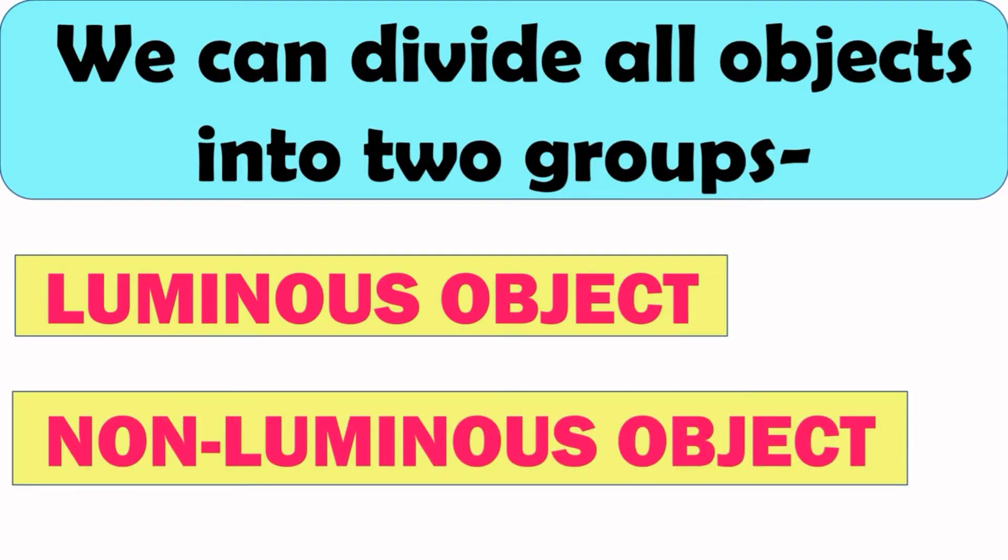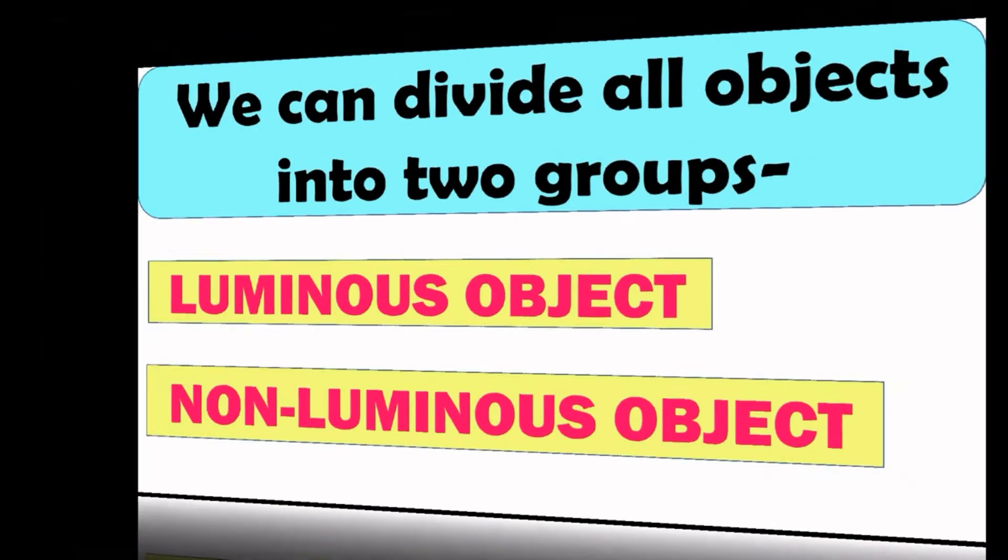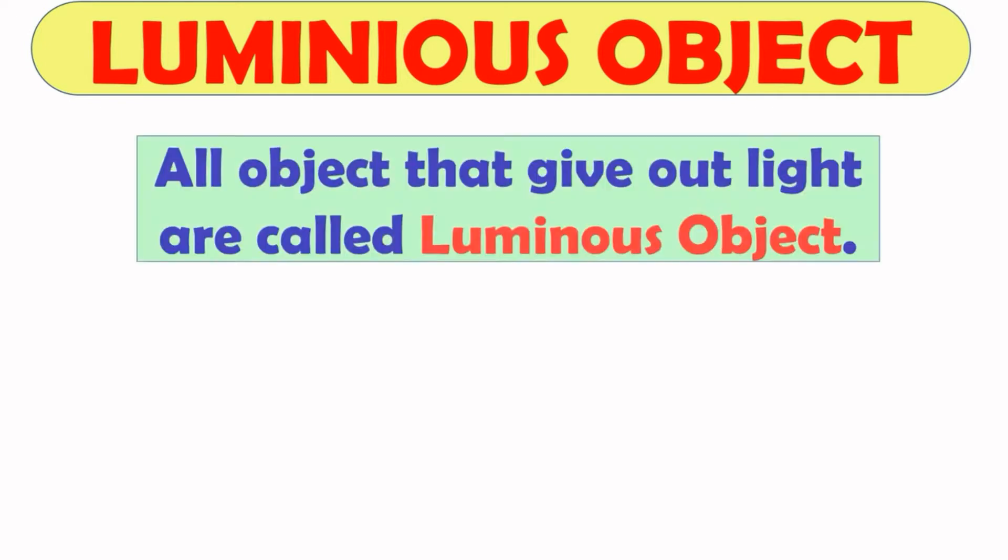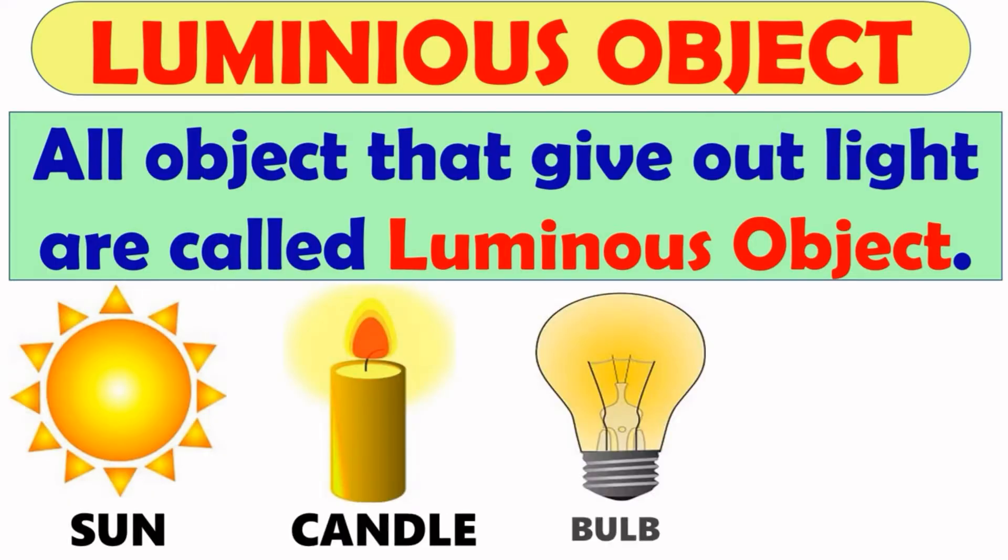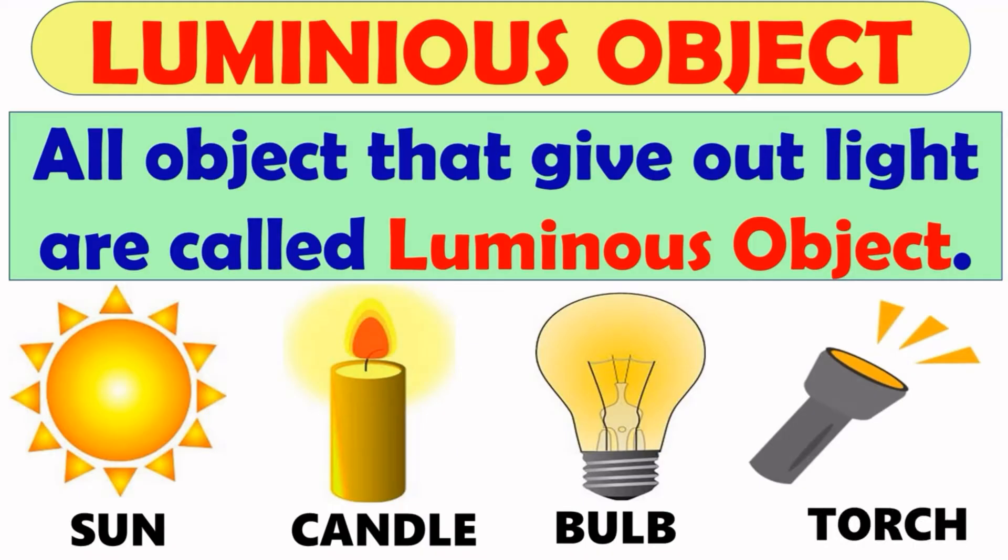Let us have a look on them in detail. So, first is luminous object. All objects that give out light or objects that emit light on their own are called luminous objects. Example, the sun is the main source of heat and light on the earth. Other sources of light are candle, bulb, torch, lamps, etc.